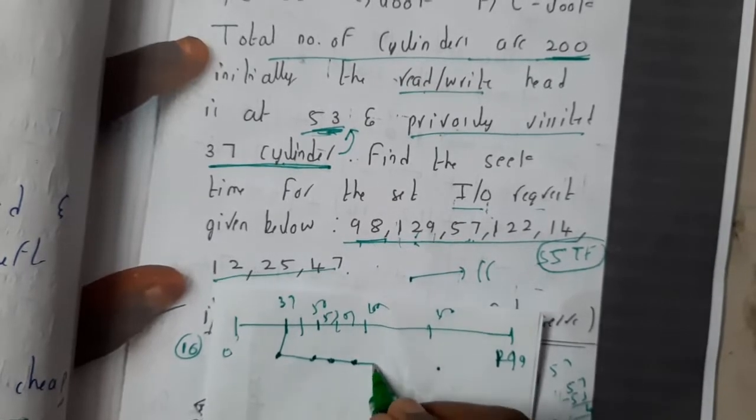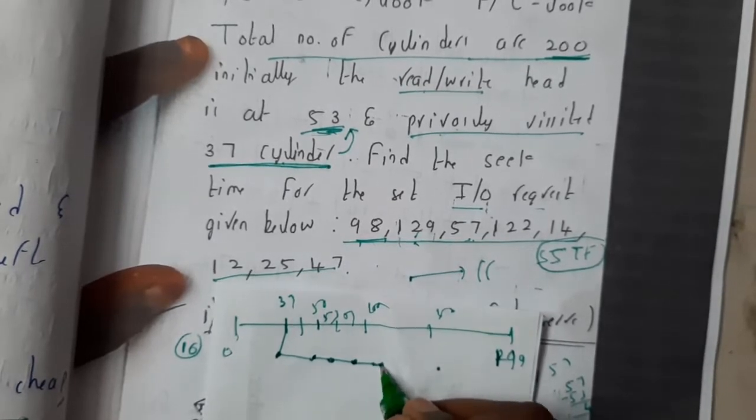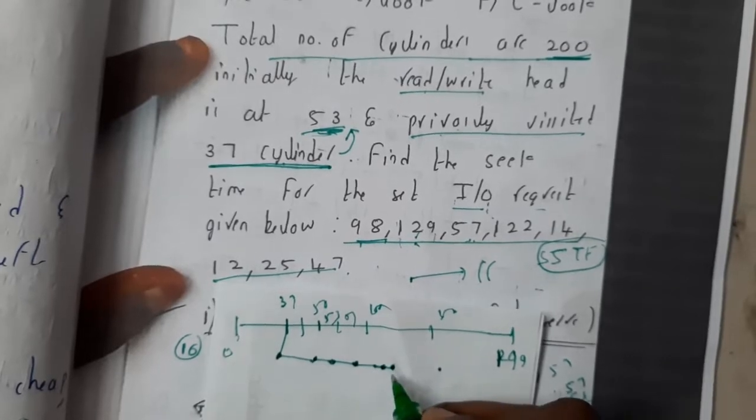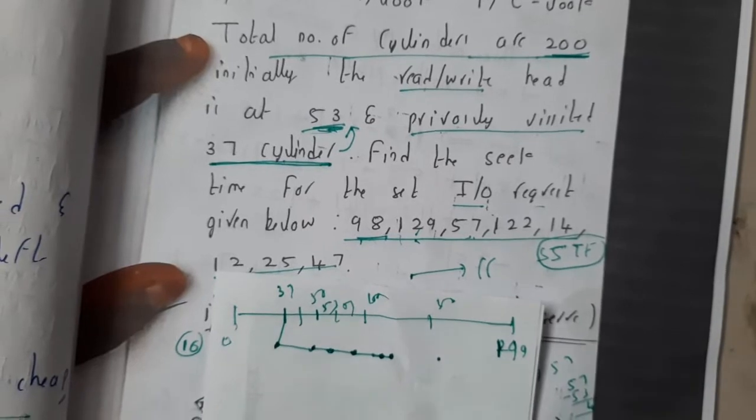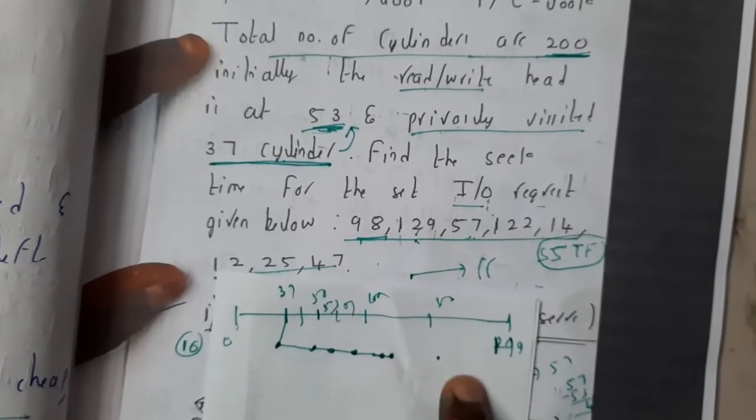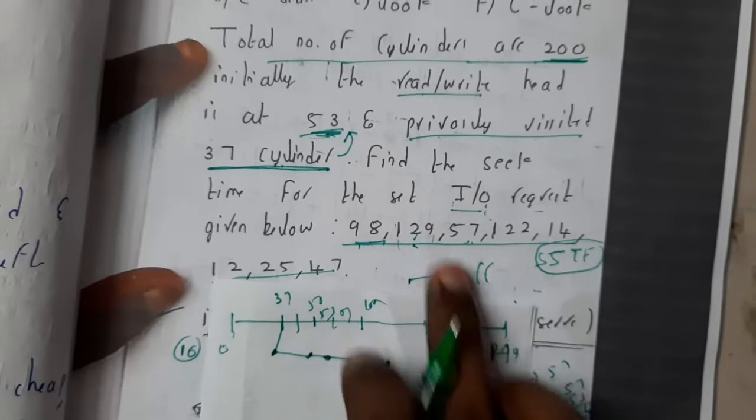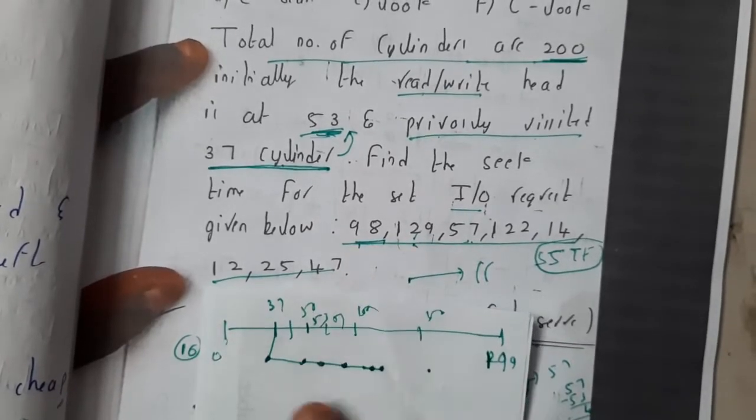After 57 it is 98, after 98 it is 122, after 122 it is 129. Once it reached 129, it will check whether there is anything future. After 129, is there anything greater? No, there is nothing greater, so it returns back directly.